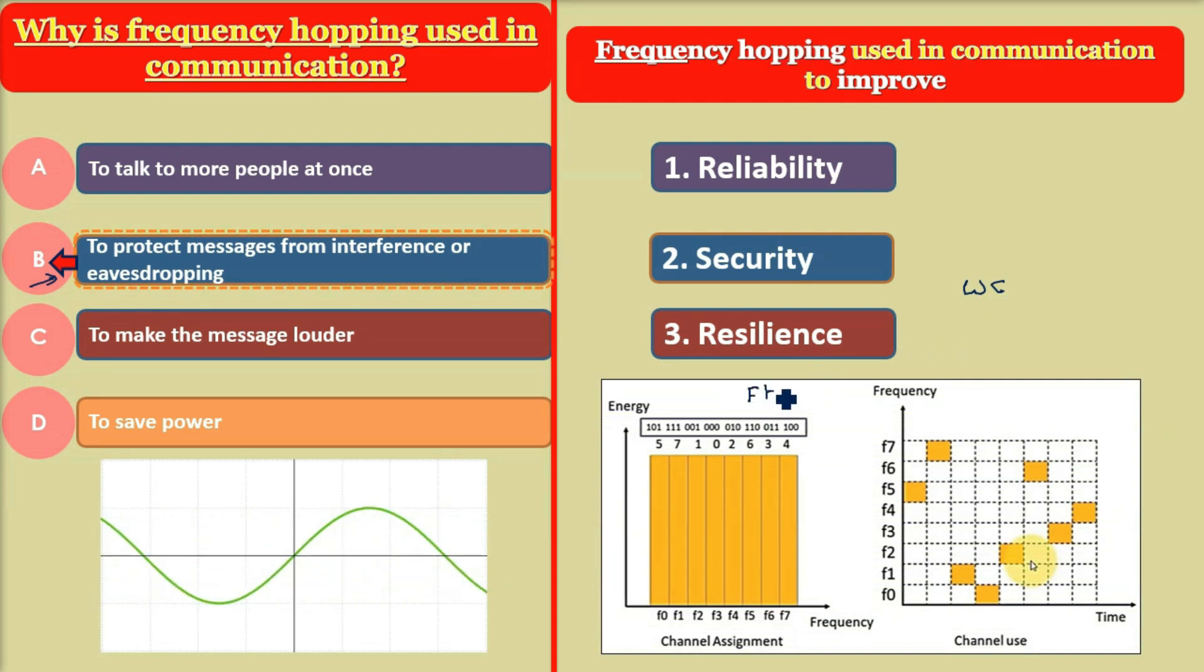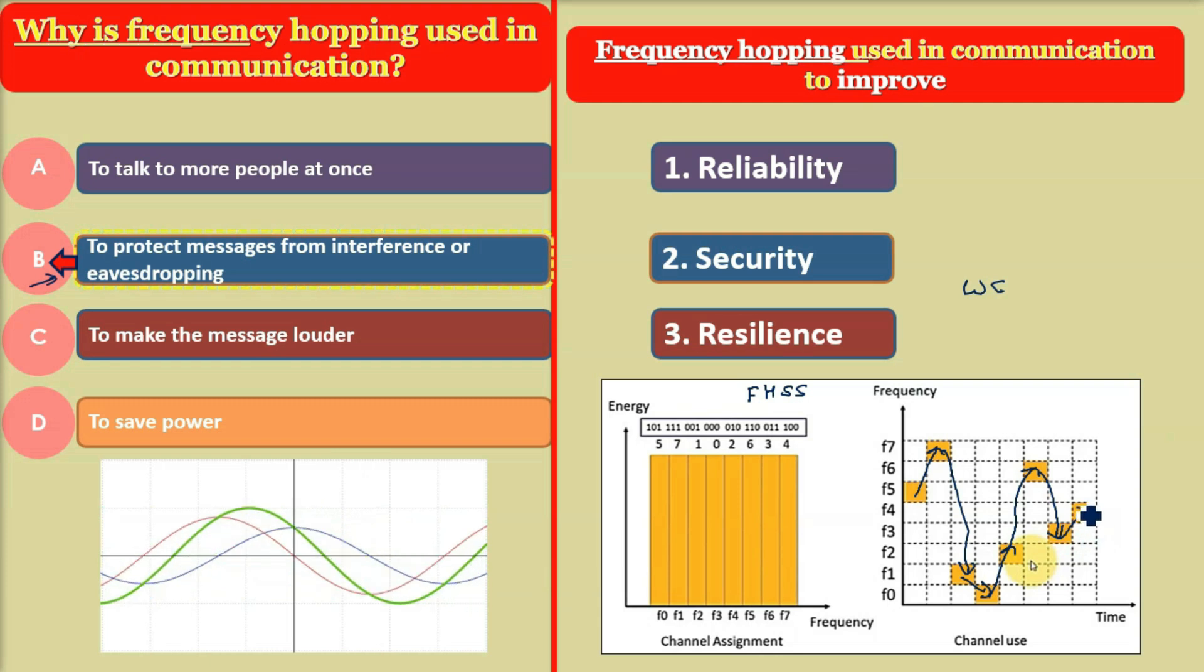Frequency hopping works by rapidly switching the frequency of the signal during transmission, making it difficult for interference or eavesdropping to disrupt or intercept the communication.